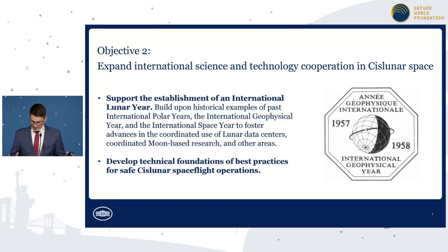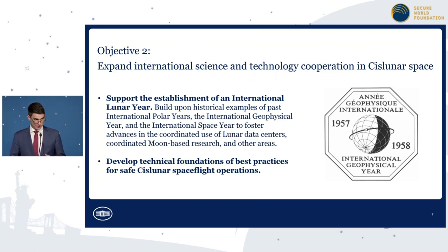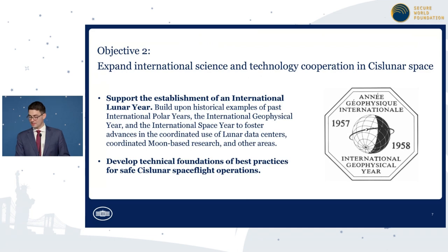Our second objective, of four, is international cooperation — expanding international cooperation. The United States is committed to demonstrating how cislunar activities can be carried out for the benefit of and in the interests of all nations, while enhancing transparency and building confidence and cooperation among moon-faring entities. International cooperation done in a manner consistent with the Artemis Accords adheres to these principles, and we welcome additional countries joining the Artemis Accords to demonstrate their commitment to these principles as well.